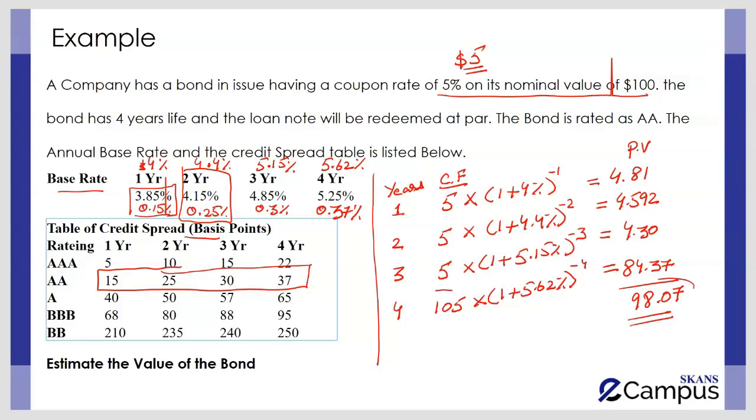This 98.07 will be the market price of the loan. So fundamentally the method is the same: we have to identify the present value of the cash flows related to the bond. But since now the cost of debt is different in each year, we have to use the respective cost of debt to estimate the present value.